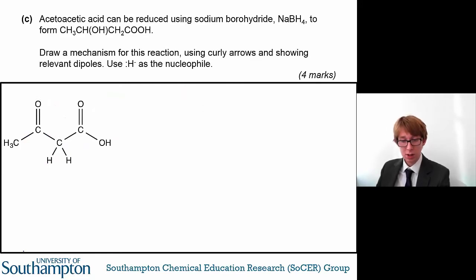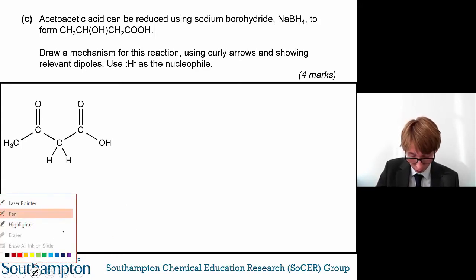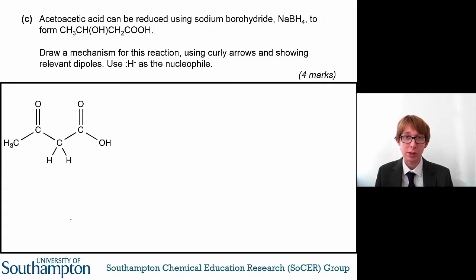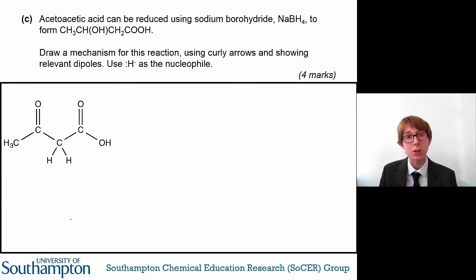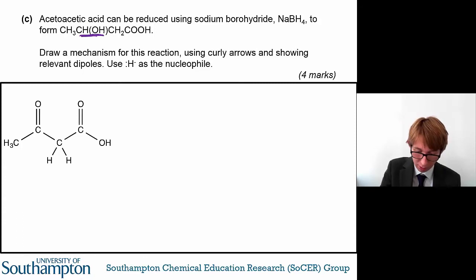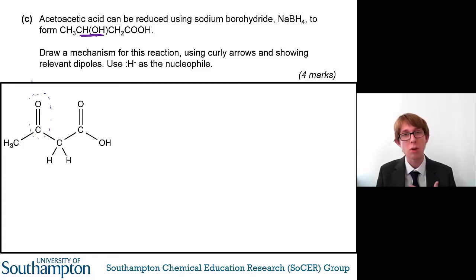The next part of the question asks: acetoacetic acid can be reduced using sodium borohydride NaBH4 to form CH3CHOHCH2COOH. You need to draw a mechanism for this reaction with curly arrows, relevant dipoles, and using H-minus as the nucleophile. Even if a question does not ask you to show relevant dipoles, I would strongly recommend drawing them on the molecule because it allows you to see where the molecule might react. The only thing different between the product and the reactant is that there is now an OH group rather than the ketone group — you're forming an alcohol from the ketone, reducing that group.